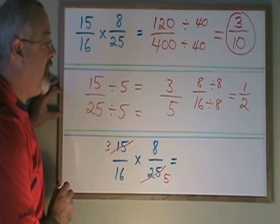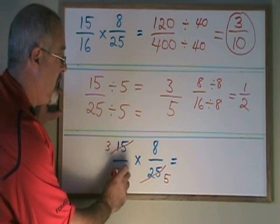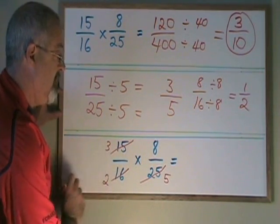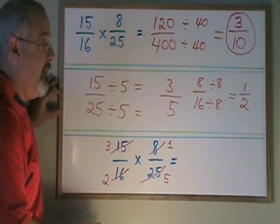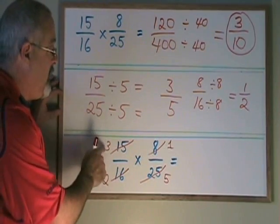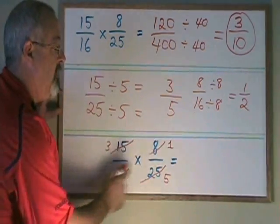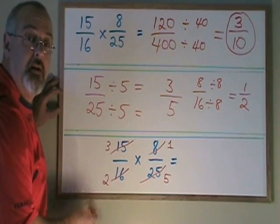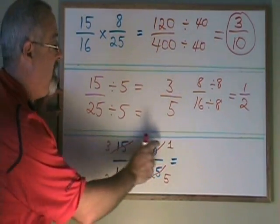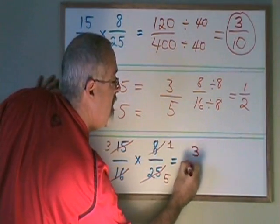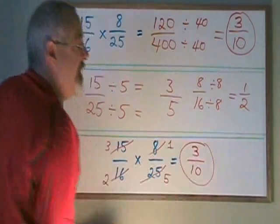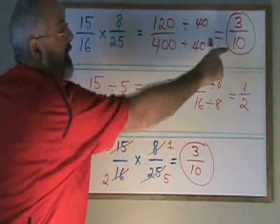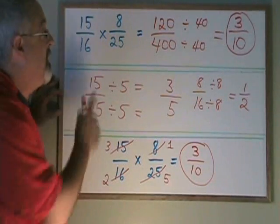I can do the same thing with the 16 and the 8. 16 divided by 8 is 2, and 8 divided by 8 is 1. Now I multiply like I'm used to, but I use the little numbers that I wrote in, my new numerators and denominators. 3 times 1 is equal to 3, and 2 times 5 is equal to 10. I have 3 tenths. It's the right answer. It's the same answer I got when I did it the other way.